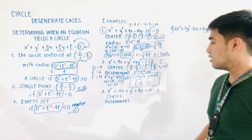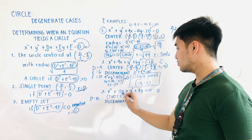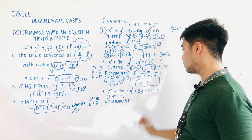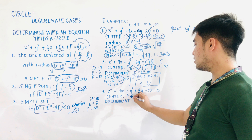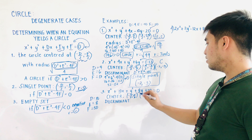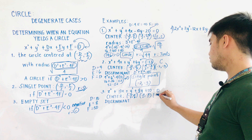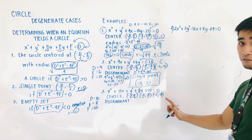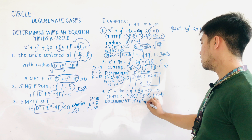For the third example: x squared plus 10x plus y squared plus 8y plus 50 equals zero. Here D equals 10, E equals 8, and F equals 50. The center would be at negative 10 over 2 and negative 8 over 2, which is negative 5, negative 4. Let us now find out if this really yields a circle using the discriminant.